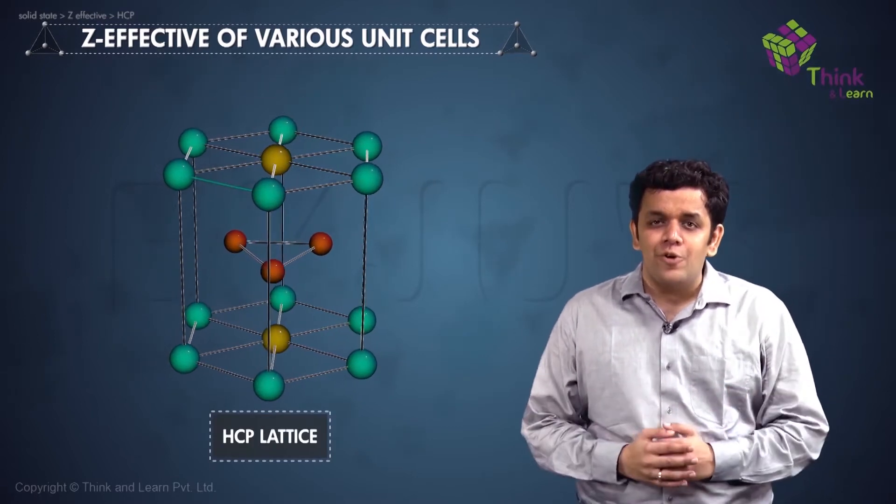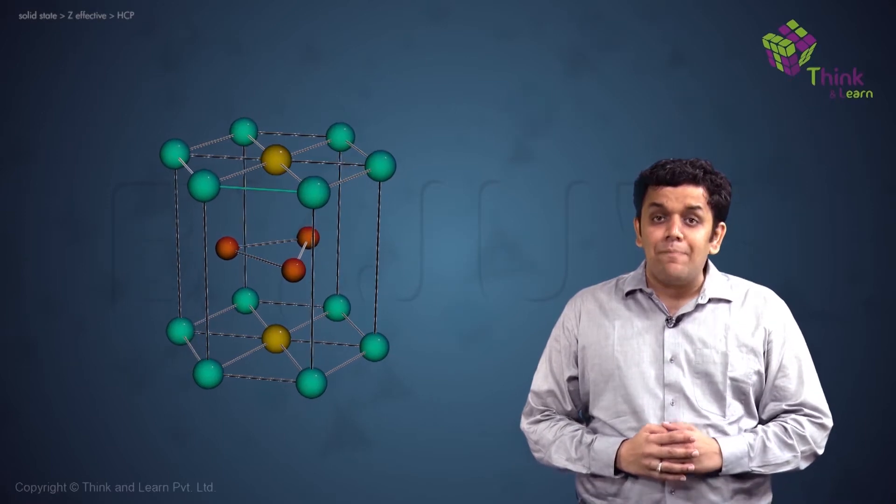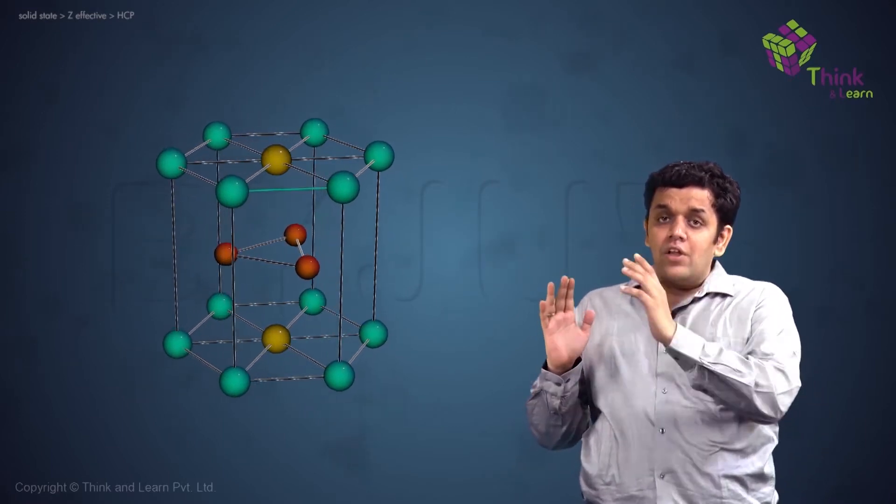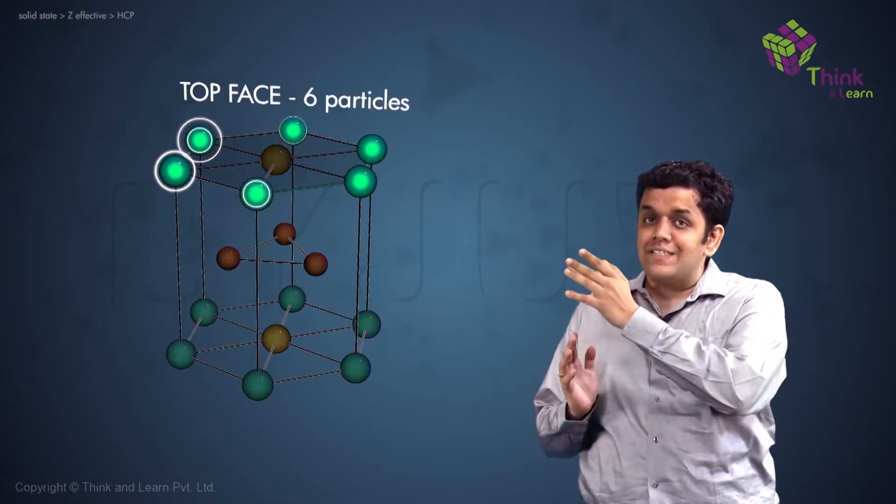Now first of all, let me help you with where exactly the particles are located. The particles are located firstly on the corners of the top face of the hexagon. Six particles as shown here.